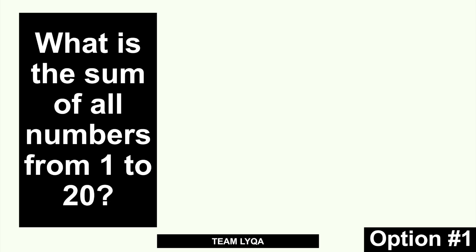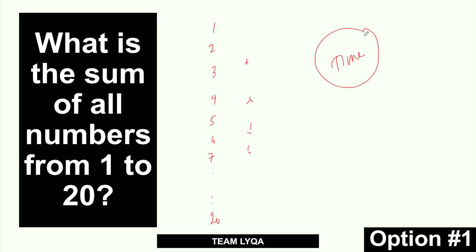What I'm going to do is present you with options on what to do. Our example: what is the sum of all numbers from 1 to 20? Option 1 is the traditional way — just write them down: 1, 2, 3, 4, 5, 6, 7, and so on until you reach 20, then add them all. The problem with this is time. If you have a limited amount of time, it takes a lot of it. And this is only 1 to 20 — imagine if it were 1 to 100 or 1 to 50.